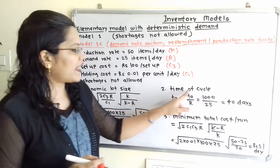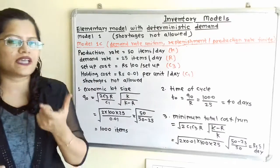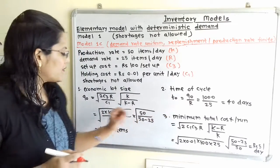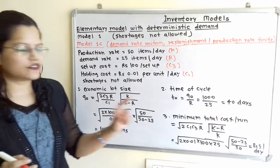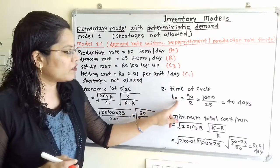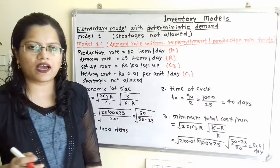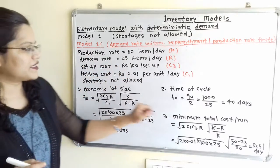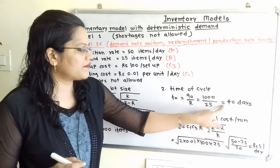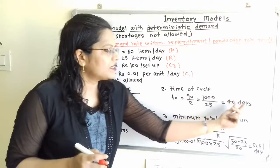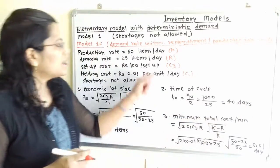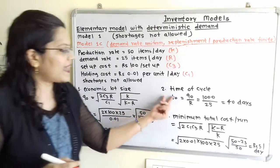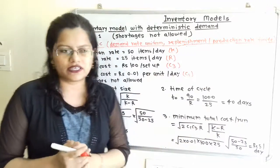Time of cycle: TO = QO/R = 1,000/25 = 40 days. The unit is days because both production and demand rates are given per day.